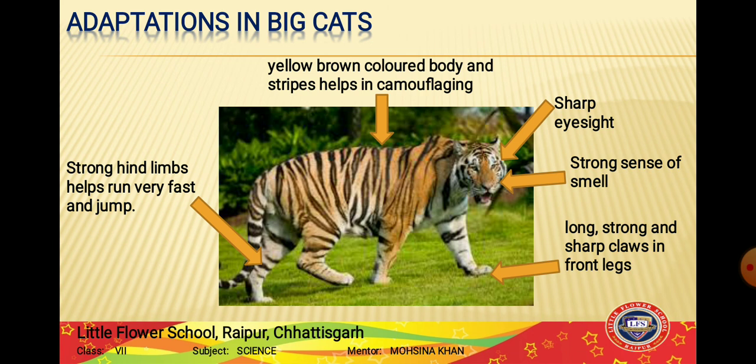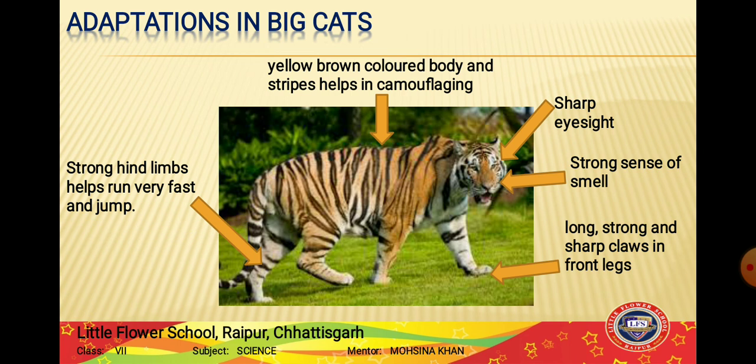Big cats also have strong hind limbs - meaning powerful back legs - which help them to jump long distances when hunting.